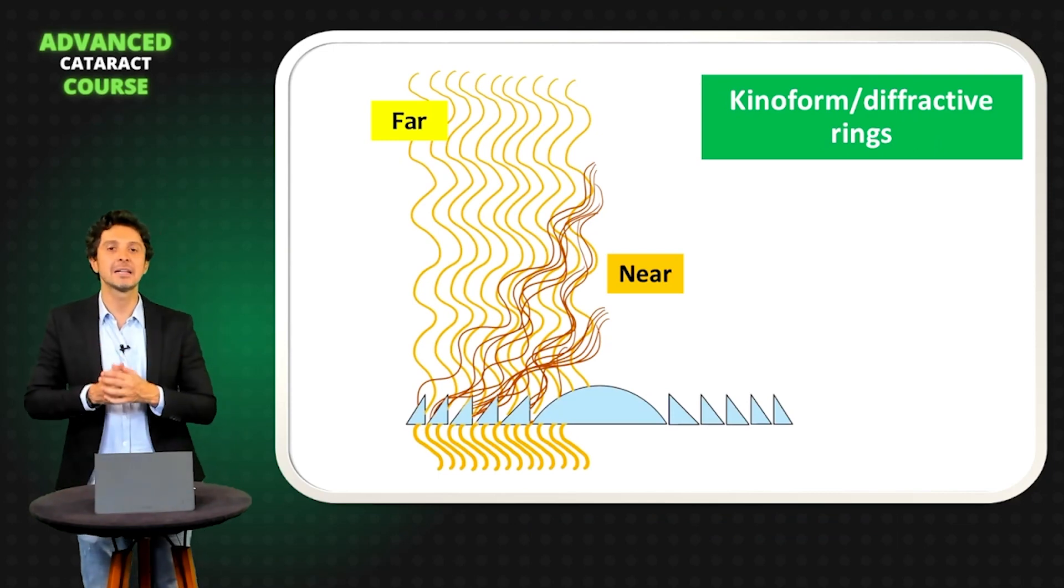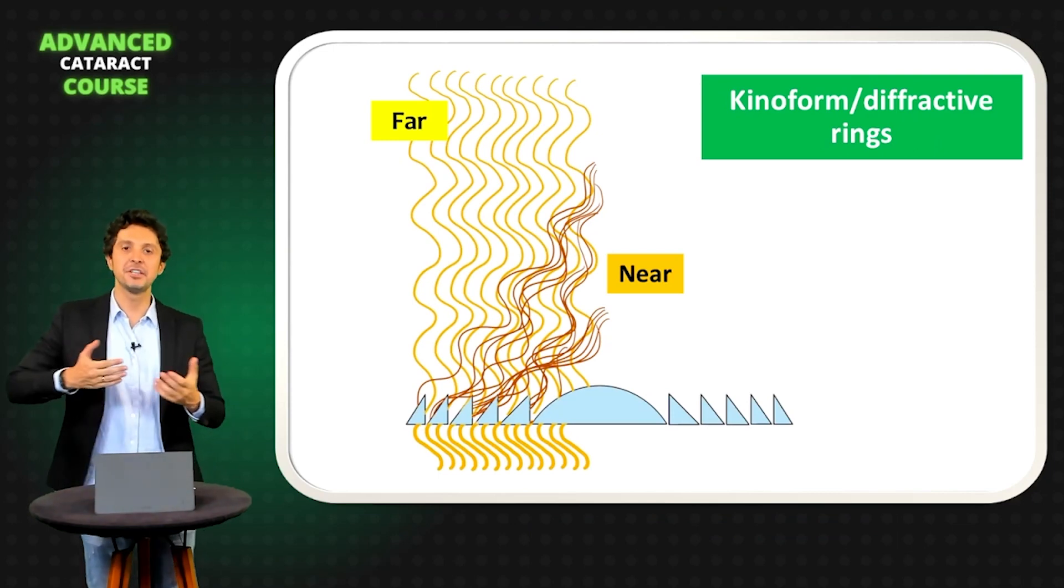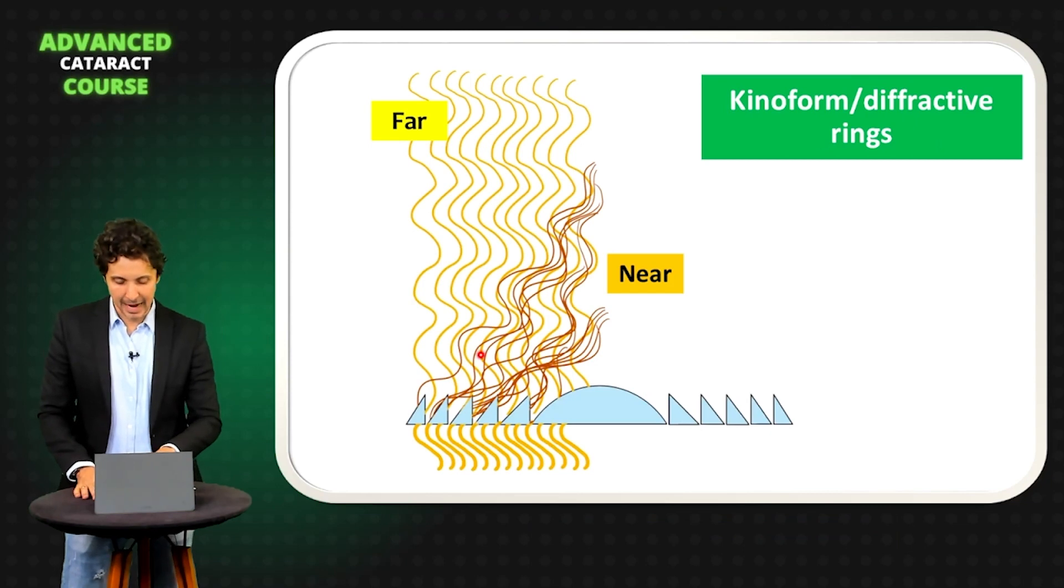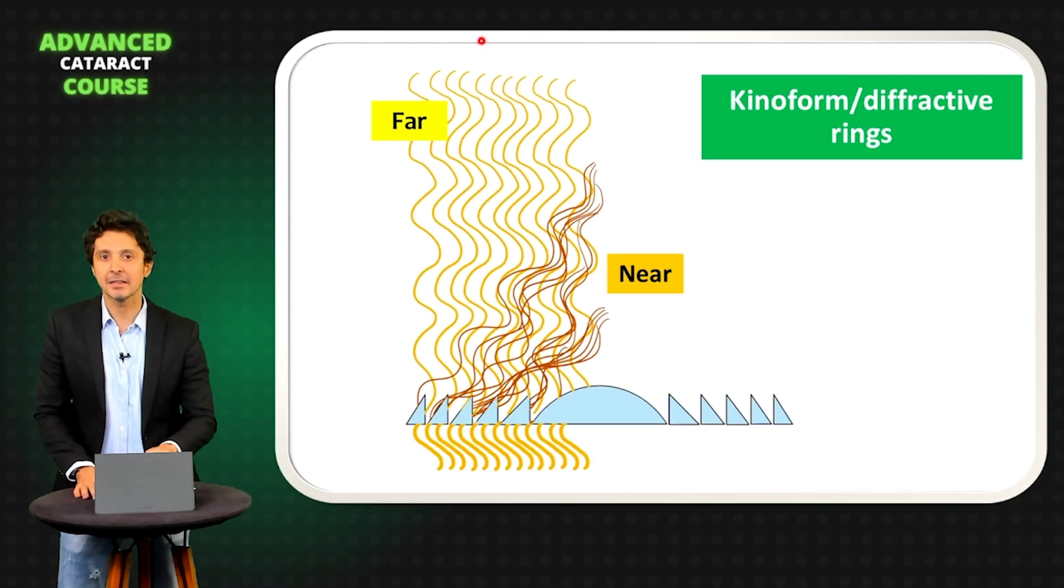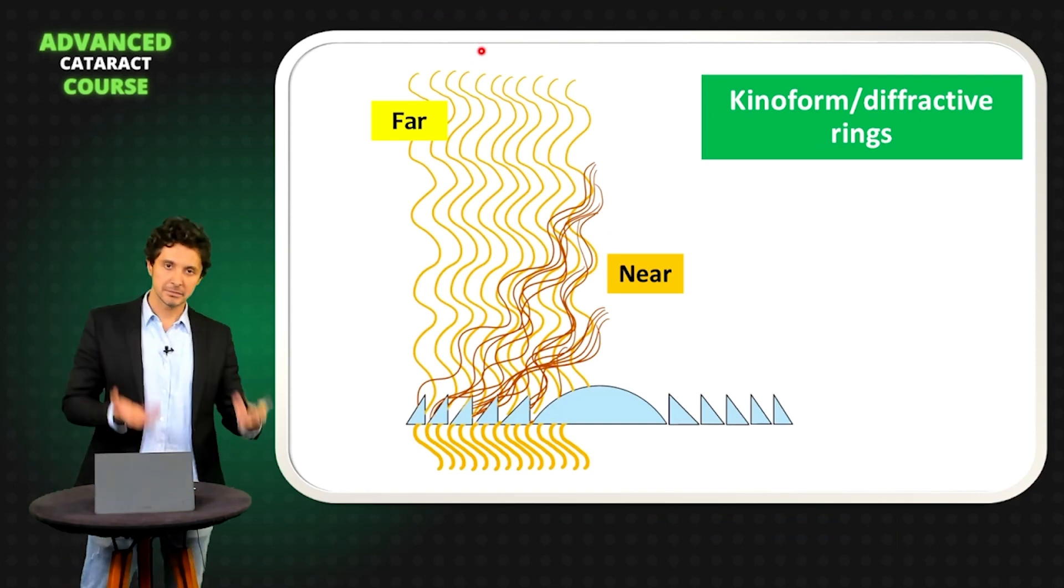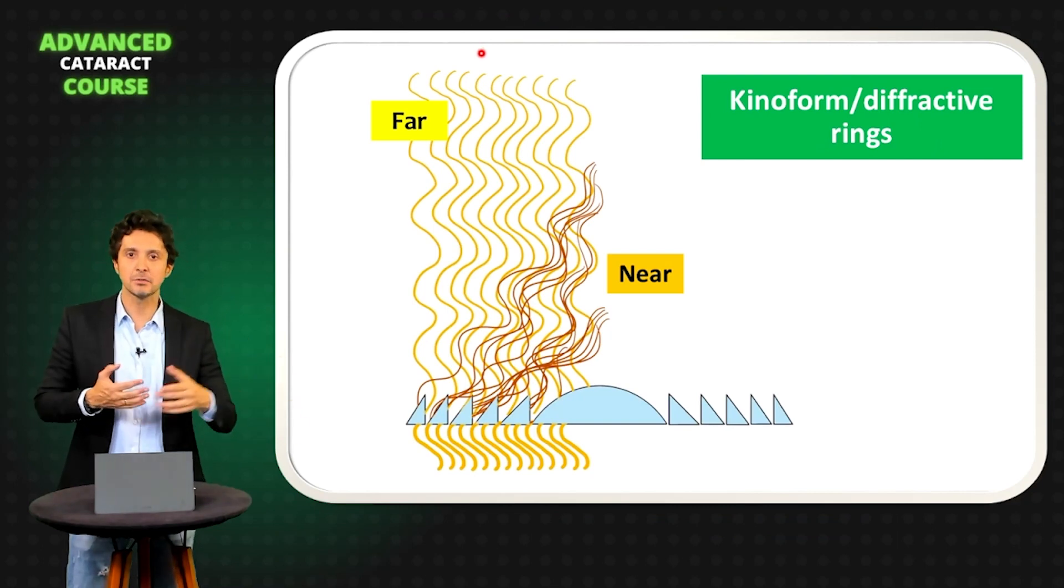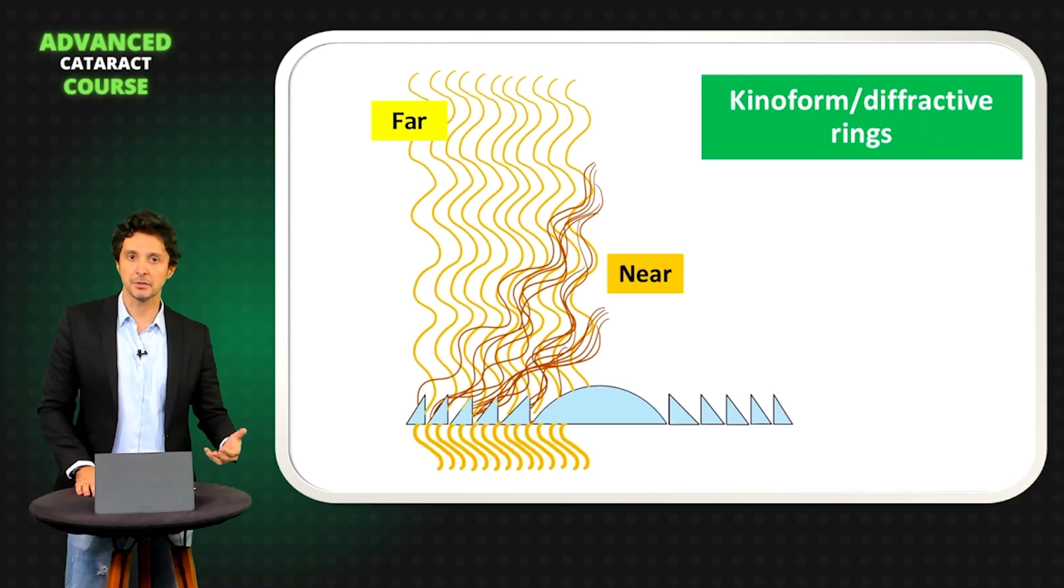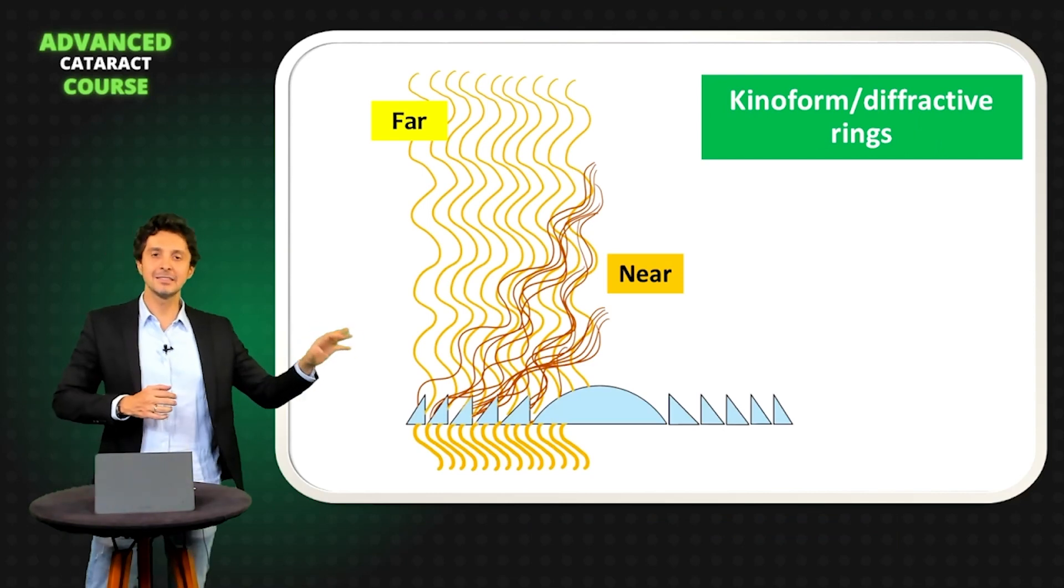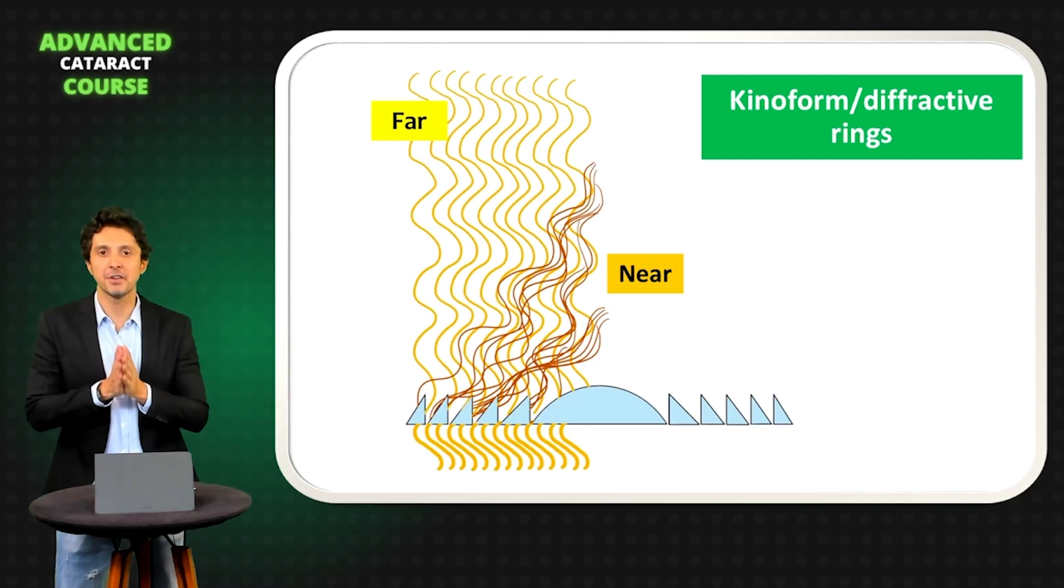What happens when the light came to these diffractive rings? Part of the light goes to near, as you observe here, and part of the light goes far. And because of this split of light, this light split, you can have the night symptom. This is the base of a diffractive IOL.